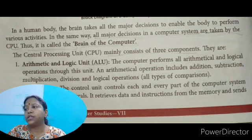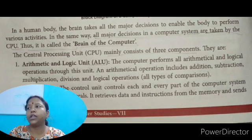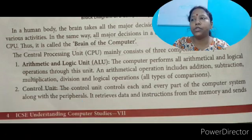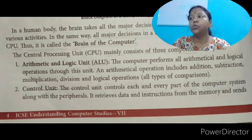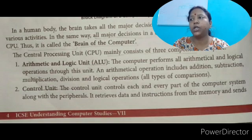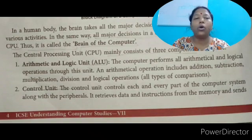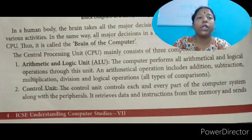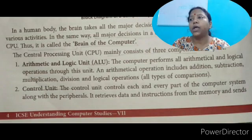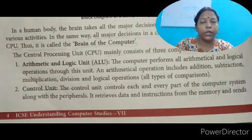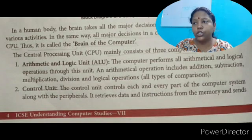The Central Processing Unit mainly consists of three components. The first is the Arithmetic and Logic Unit. The computer performs all arithmetical and logical operations through this unit. Arithmetical operations include addition, subtraction, multiplication, and division. Logical operations means AND, OR, and NOT operations. This unit is used to perform all types of operations: arithmetical, logical, and relational operations.